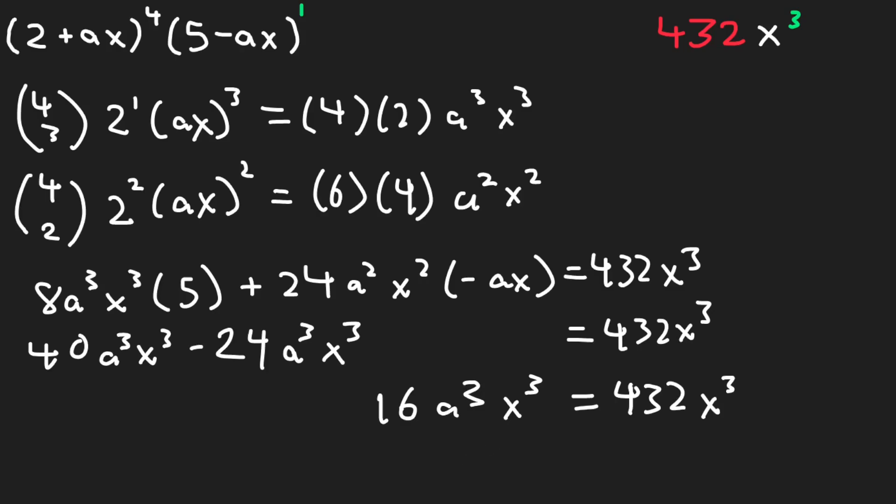Now, I can divide both sides by 16 to give us a cubed equals 27. 27 can be rewritten as 3 cubed. And so, we simply have a equals 3, because 3 is an odd power. We don't need to mess with plus or minus signs. And that's how we solve this a-level question.